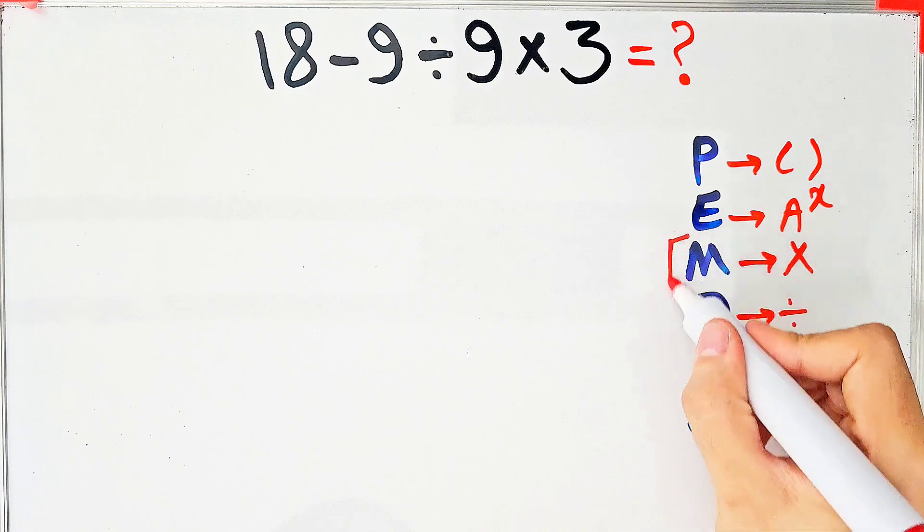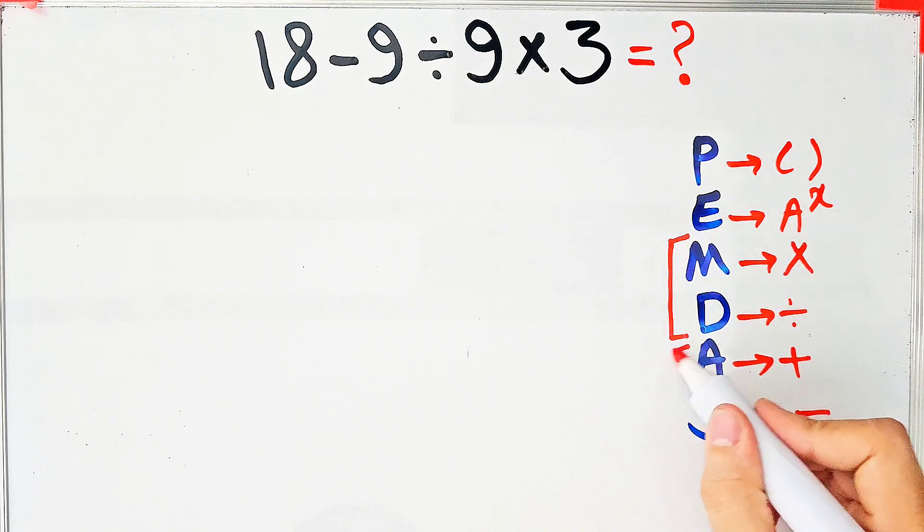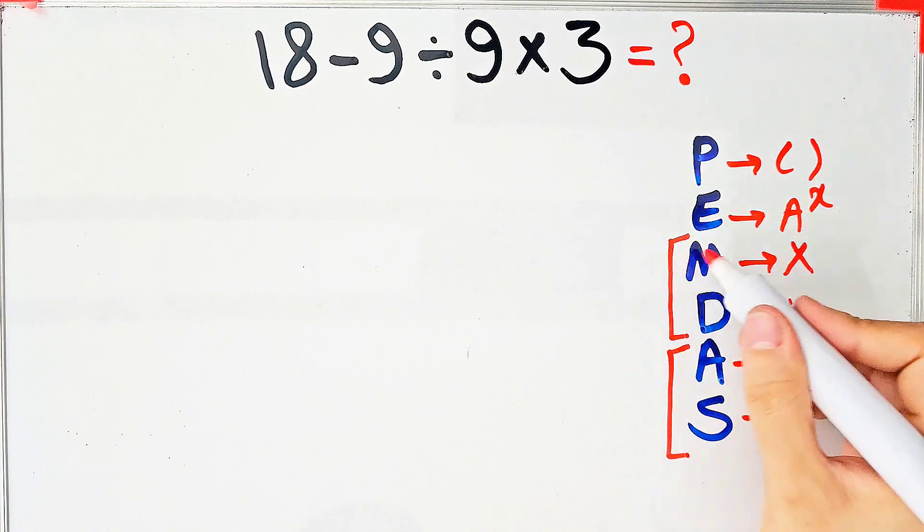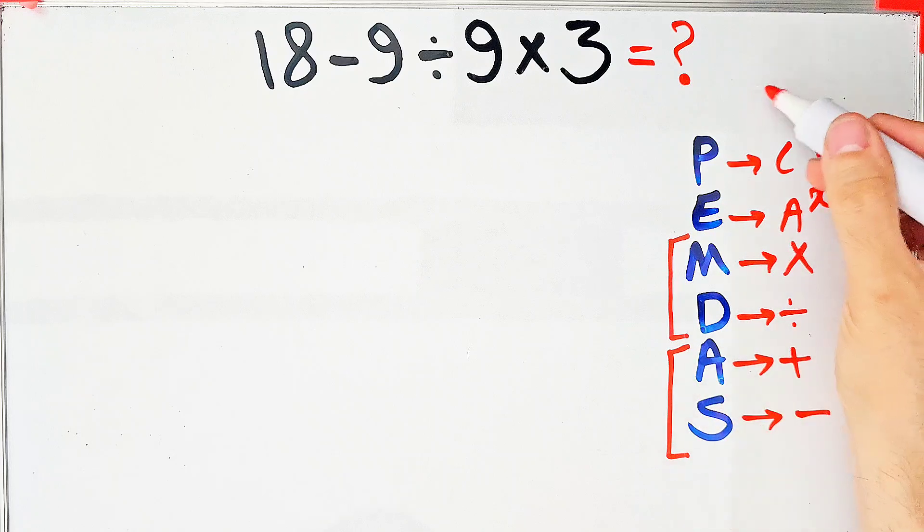Multiplication and division have the same level of priority, also addition and subtraction have the same priority. When we have both in an expression, we start from the left and simplify the question.